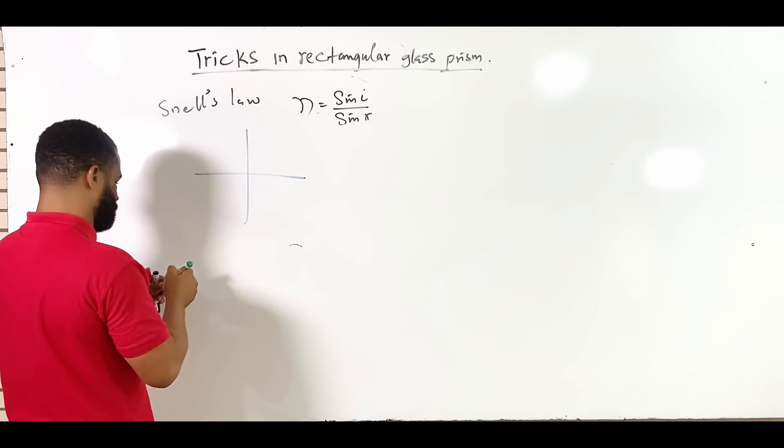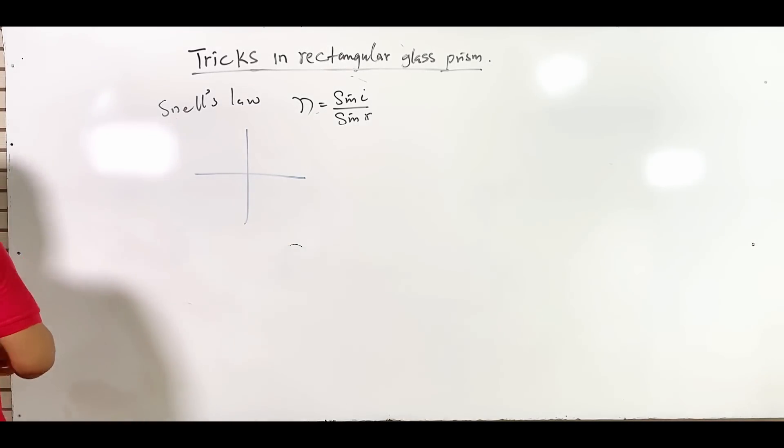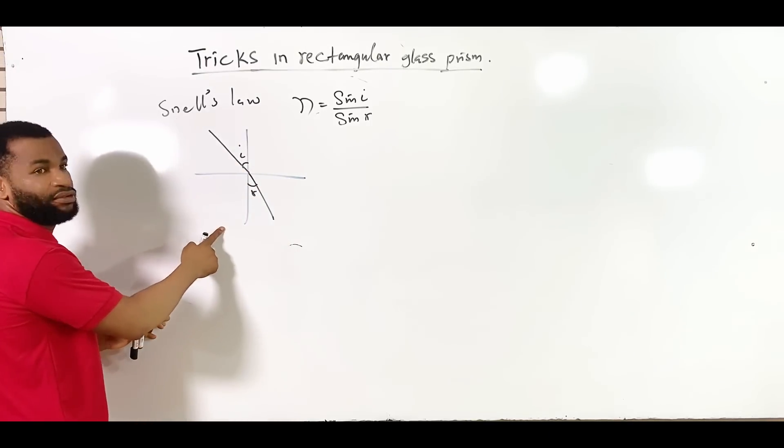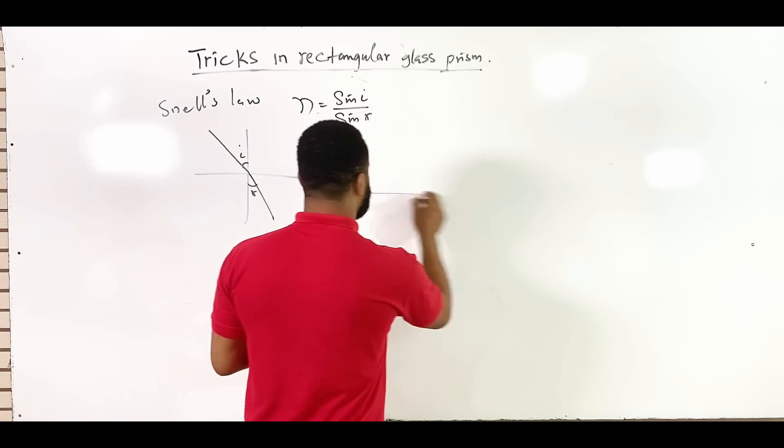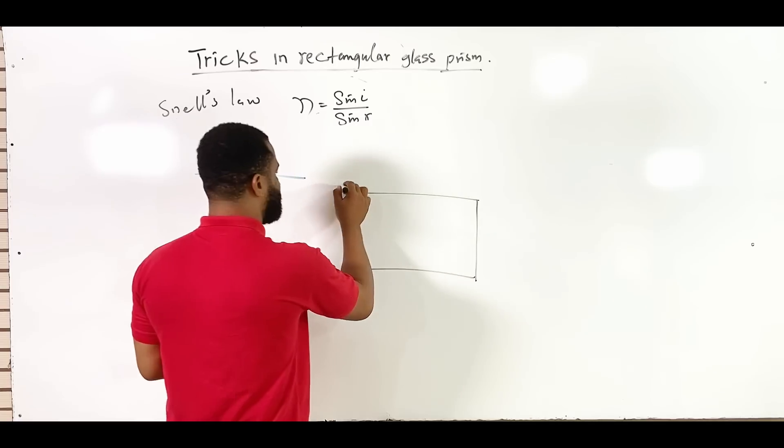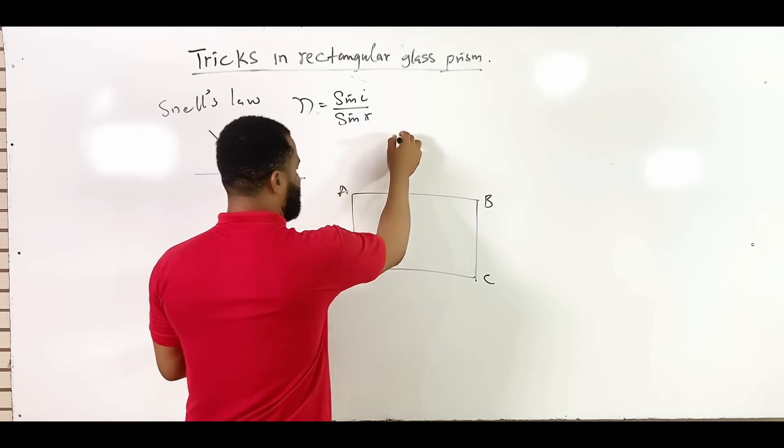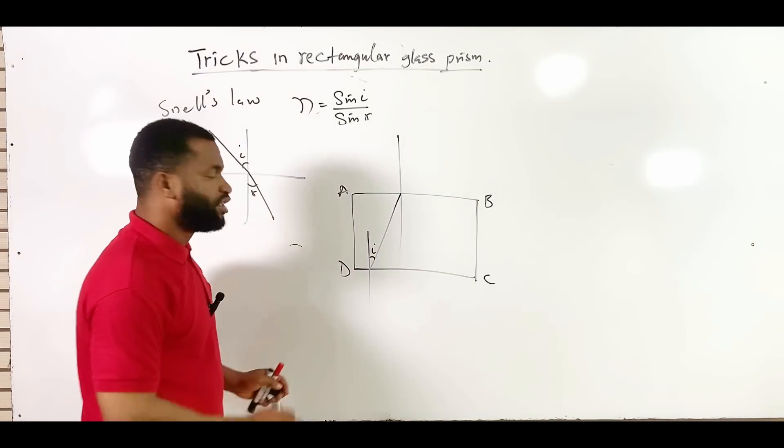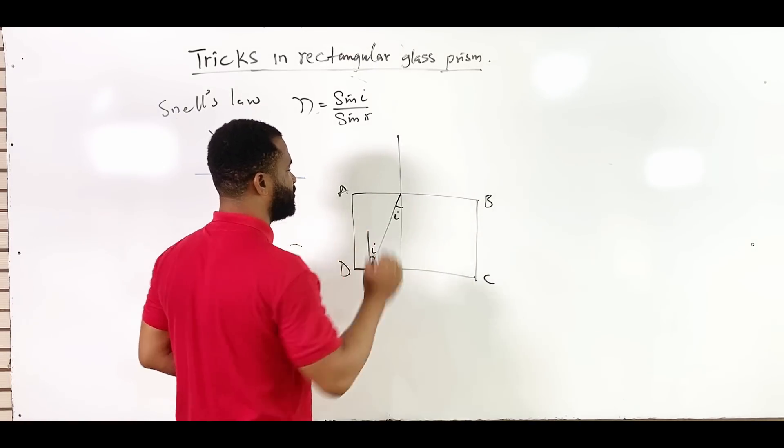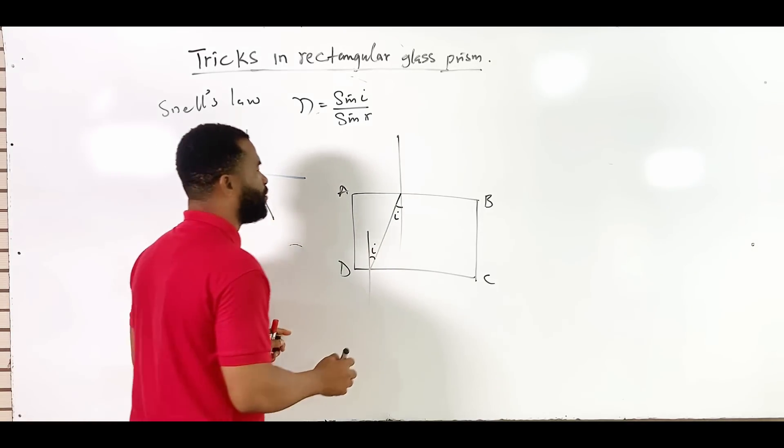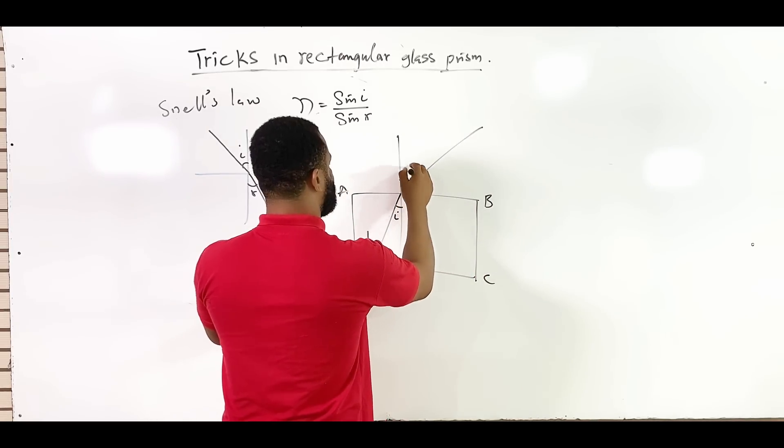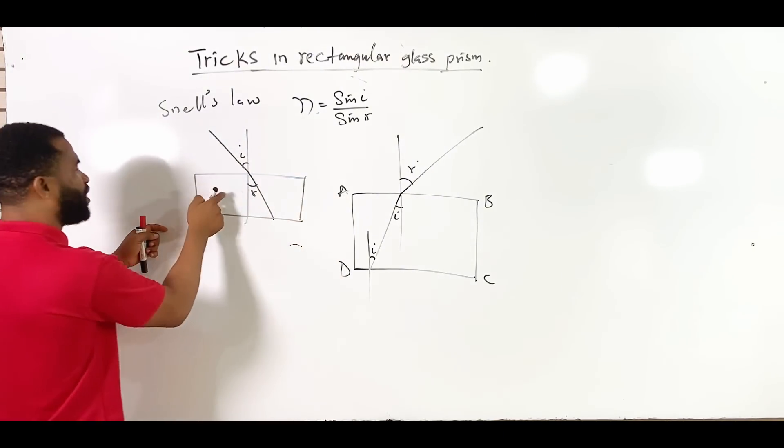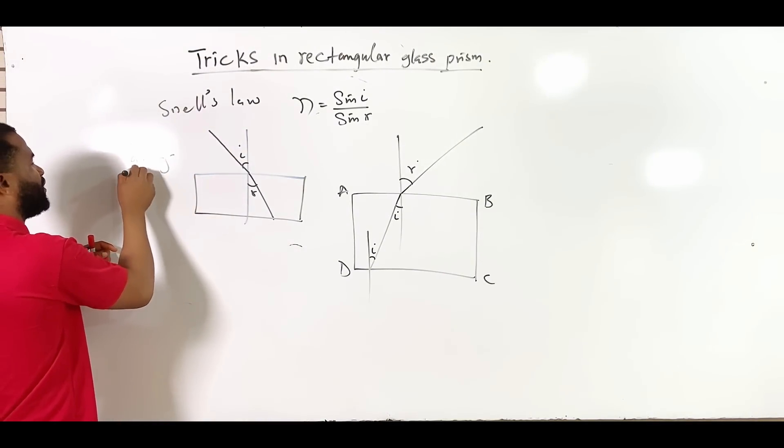What I have just done is when light is passing from air, this is incident angle, into the glass. This is the refracted angle. But what if you are given something like this? This is the rectangular glass A, B, C, D. And you are given this angle. Remember that this I will be the same thing here as I, because they are alternate angles.